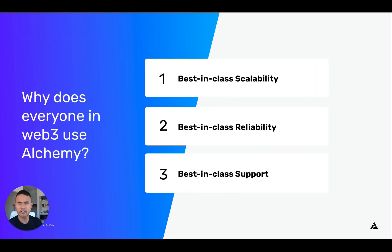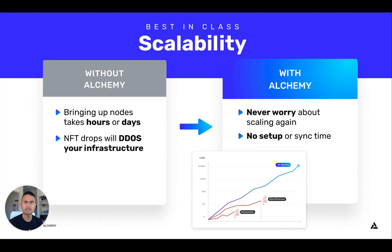Why does everybody use Alchemy? It all comes down to app health — making sure that your dApp is functioning properly no matter what the situation is. First, Alchemy has best-in-class scalability. Say you want to do a big NFT drop — that means you'll get tens of thousands of requests in under a few seconds, basically DDoSing your fragile infrastructure. You don't need to worry about this with Alchemy. You can send us 10 requests or 10 million — we've got it handled.